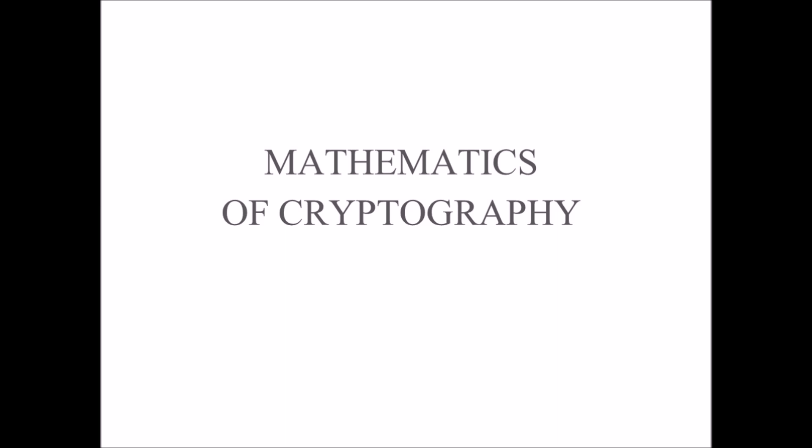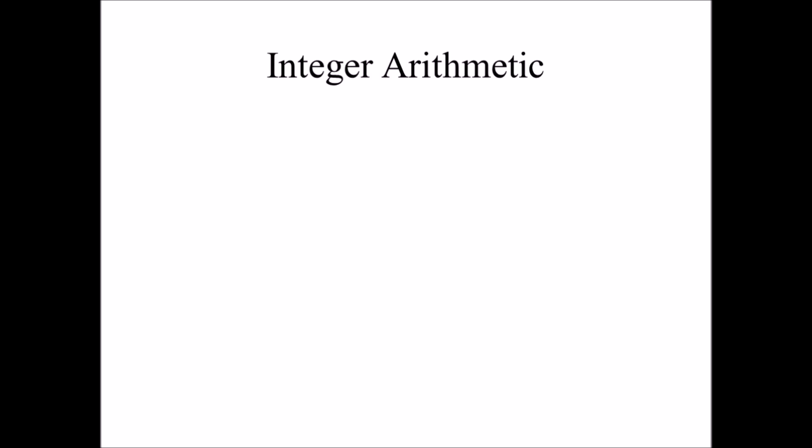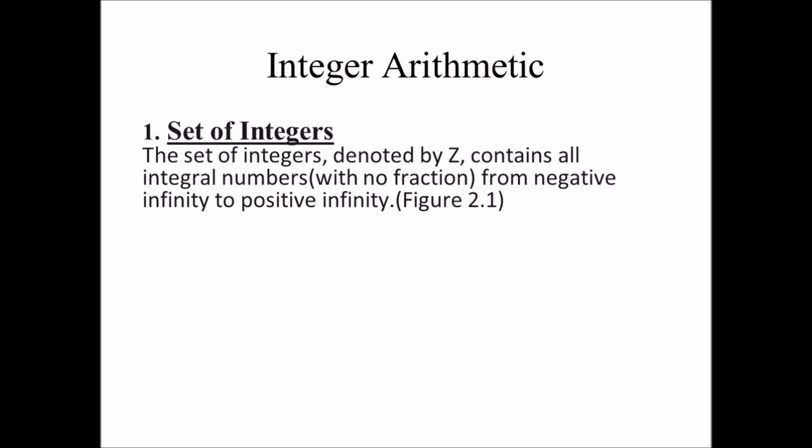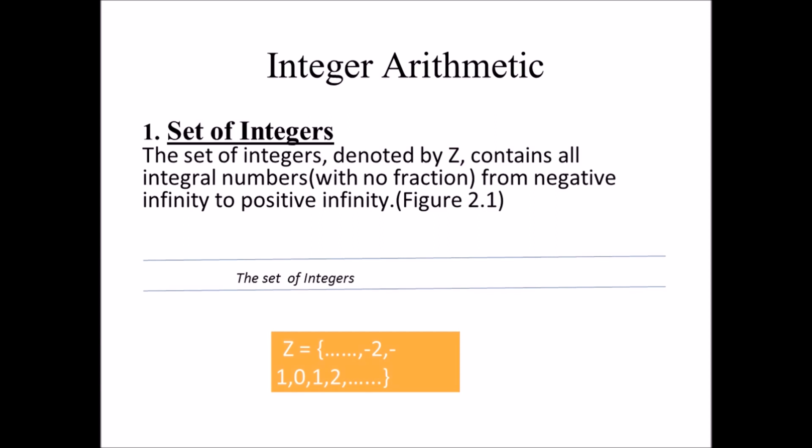Integer arithmetic. Here we use a set and a few operations. You might be familiar with this set and operations, but we will discuss them with respect to cryptography. A set of integers is a collection of numbers ranging from negative infinity to positive infinity. Integer set does not include fractions. An integer set is denoted by capital alphabet Z. Z is a set of negative and positive integer numbers and does not contain any fractions.